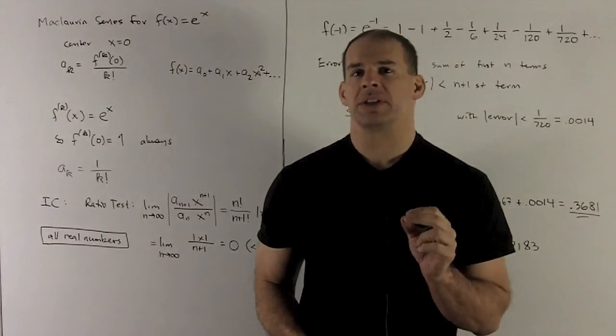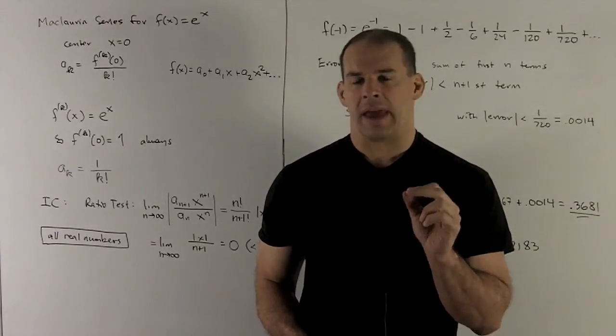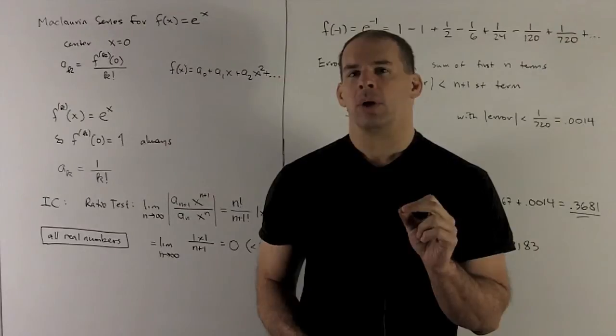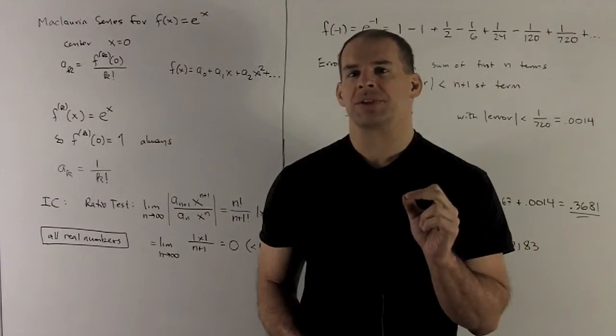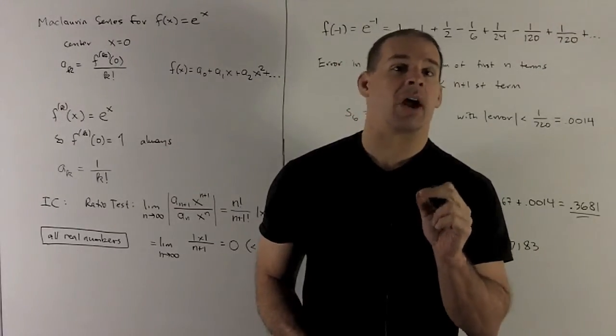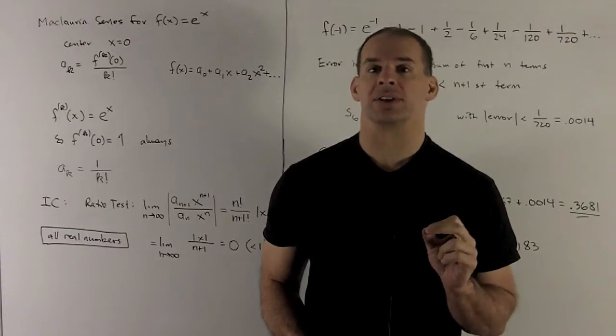Let's derive the Maclaurin series for e to the x, then we'll evaluate at a point where we can get out an alternating series, and then we'll remind ourselves how we estimate errors using the alternating series test.